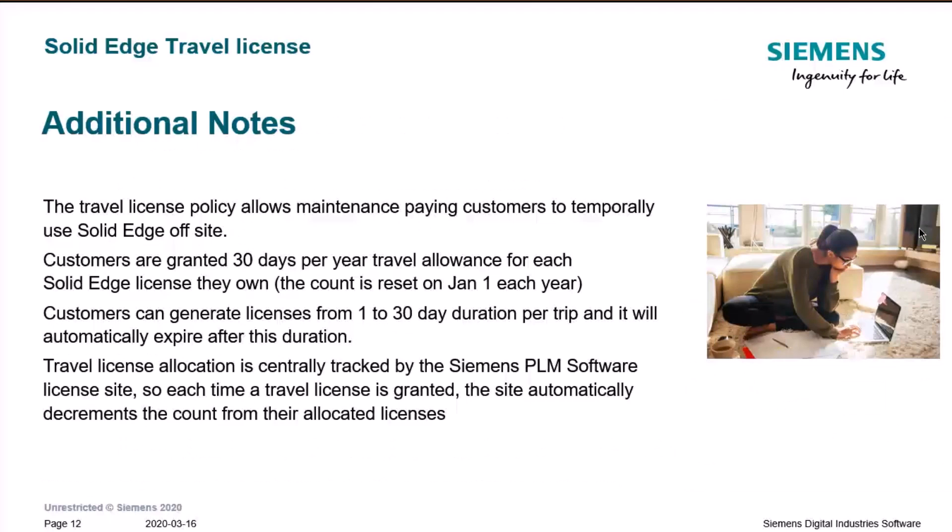Some additional notes on travel licenses: the travel license policy allows maintenance-paying customers to temporarily use Solid Edge off-site, whether traveling or working at home. Customers are typically granted 30 days per year travel allowance for each Solid Edge license they own, and the count resets on January 1st of each calendar year. Customers can generate licenses from 1 to 30 days duration per trip, and they automatically expire. These travel licenses are tracked by Siemens PLM software license site, which automatically decrements the count from their allocated licenses each time one is granted.